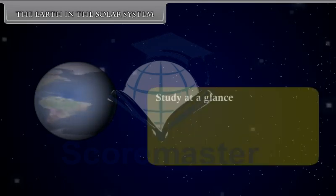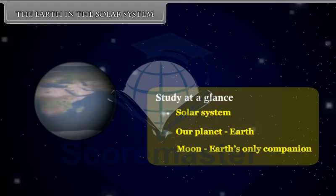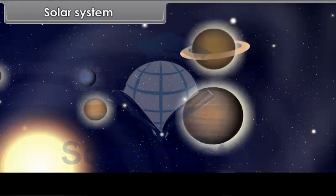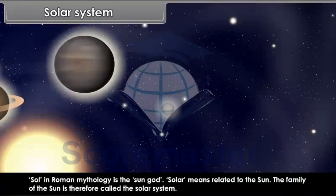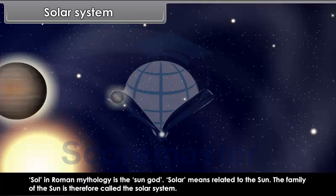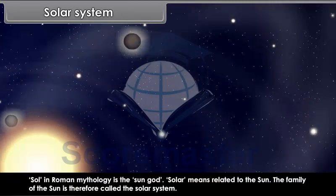Solar System. Soul in Roman mythology is the sun god. Solar means related to the sun. The family of the sun is therefore called the solar system.